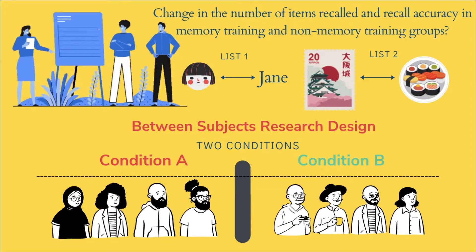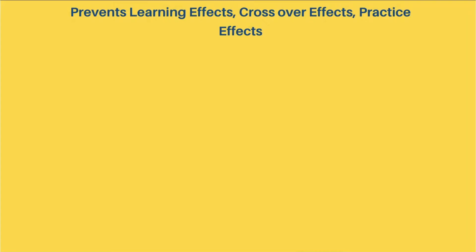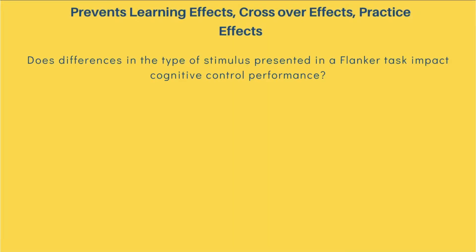Now that we understand what the between-subjects design is, let's look at its advantages. The first advantage is that it prevents the effects of learning, crossover effects, and practice effects. Let's understand this with an example.